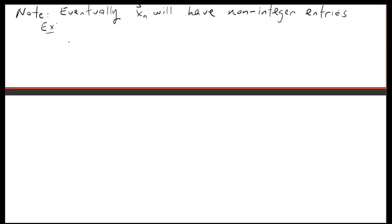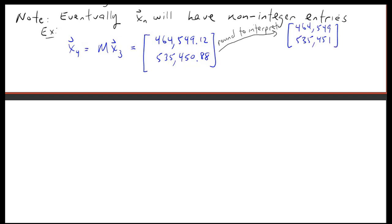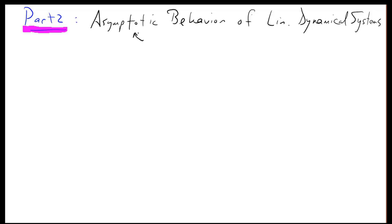Something to note: eventually the population vector will have non-integer entries. For example, x_4 = M·x_3 yields fractional numbers. When interpreting the population vector we round to the nearest integer, since people come in whole numbers. However, when computing we do not round — if we round x_4 to compute x_5, errors propagate into x_6 and beyond. We avoid this propagation of errors by using exact values when computing.